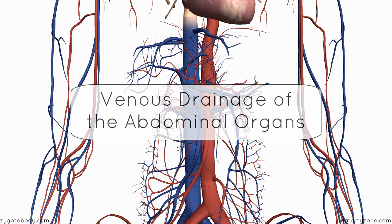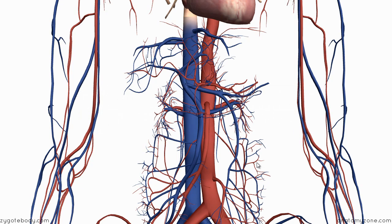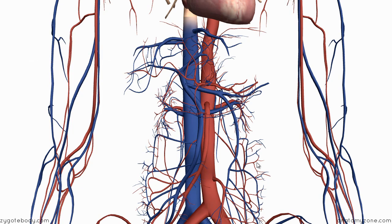Now we're going to take a look at the venous drainage of the abdominal organs. The blood doesn't return to the inferior vena cava and then into the right side of the heart. It actually passes through the liver, through the portal system. So you've got this deoxygenated, nutrient-rich blood which passes through the portal system into a second vascular bed inside the liver. Then the liver has hepatic veins which drain into the inferior vena cava. So the venous drainage of the gut is through the portal system.